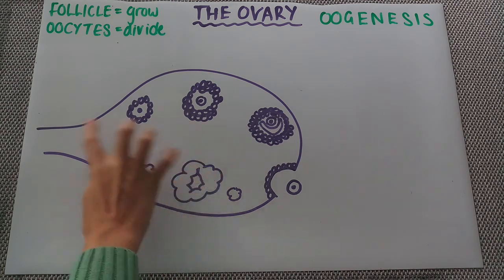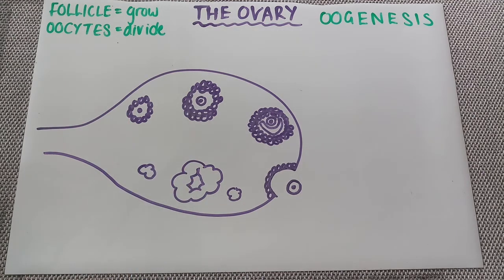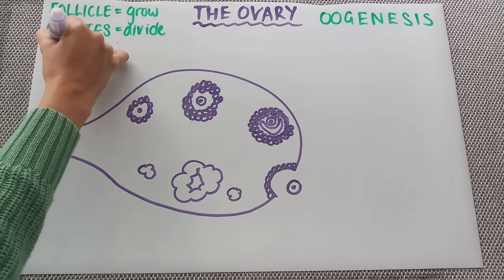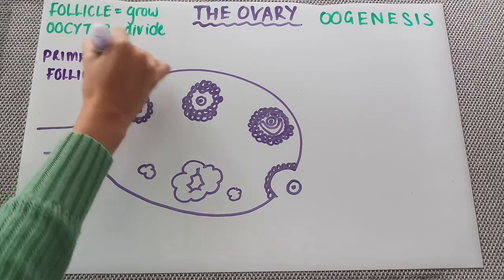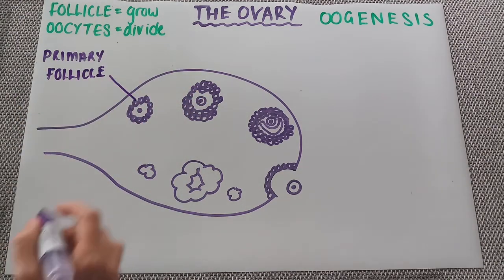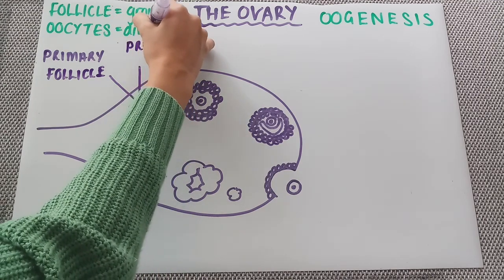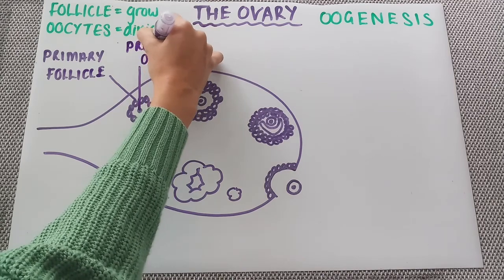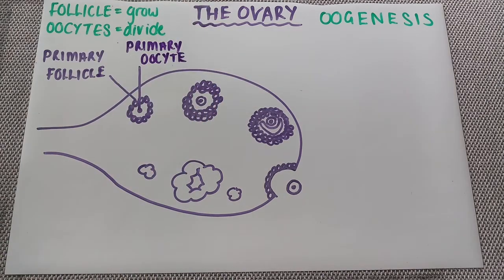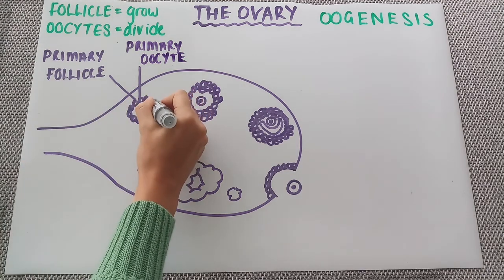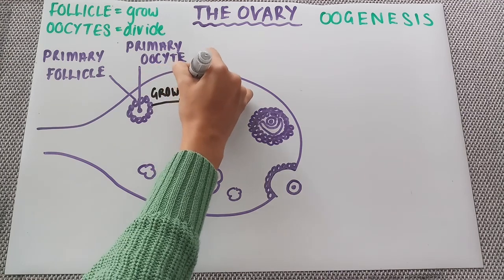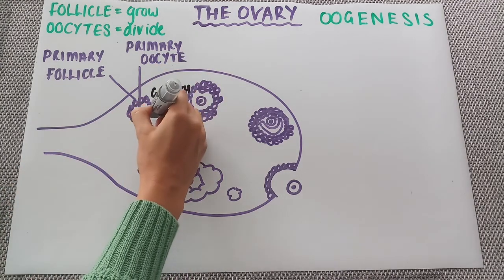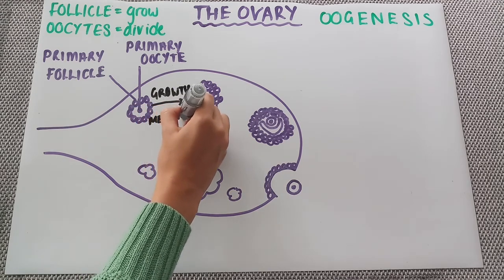Starting at the top left of this ovary diagram, this picture shows a primary follicle, shown by all of these little circles around the outside, and within the primary follicle is a primary oocyte. The primary follicle and the primary oocyte then go through their different processes — the follicle is going through growth, and the primary oocyte is going through meiosis 1.